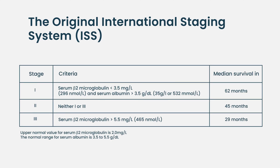The original international staging system, based on data from clinical trials and observation, showed that two factors — beta-2 microglobulin and serum albumin — determine the stage of the disease. High beta-2 microglobulin is bad; low albumin is bad. Patients at ISS stage one had a beta-2 microglobulin level of less than 3.5 and serum albumin of 3.5 or higher, which was normal. ISS stage three had a very high beta-2 microglobulin of more than 5.5, and in between was ISS stage two.